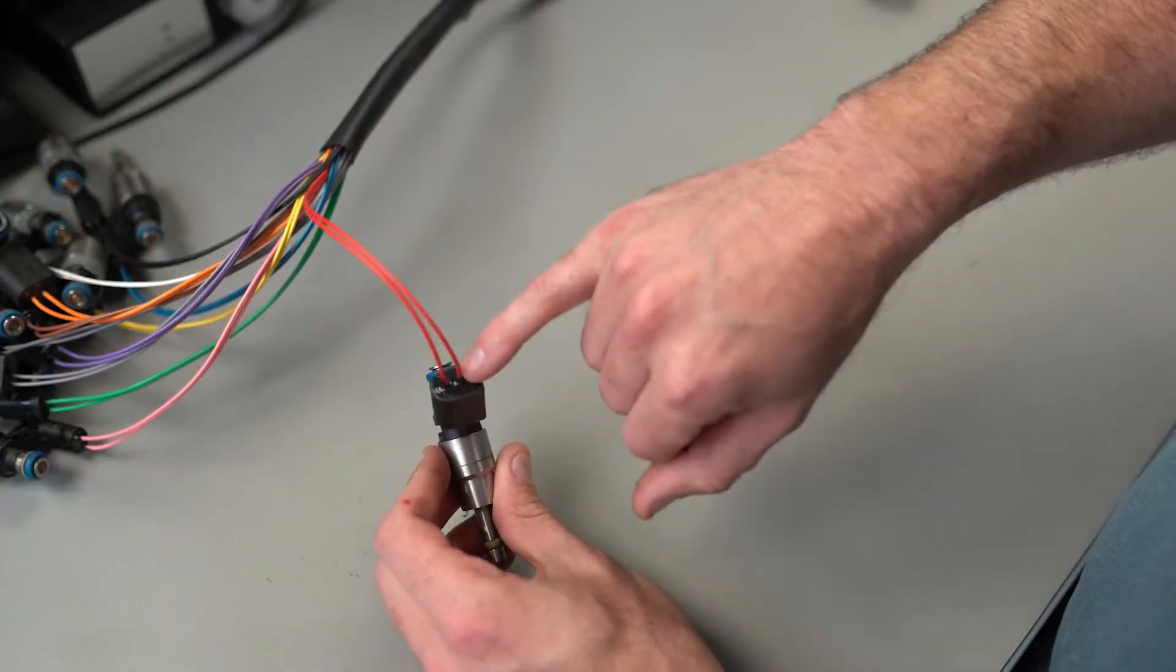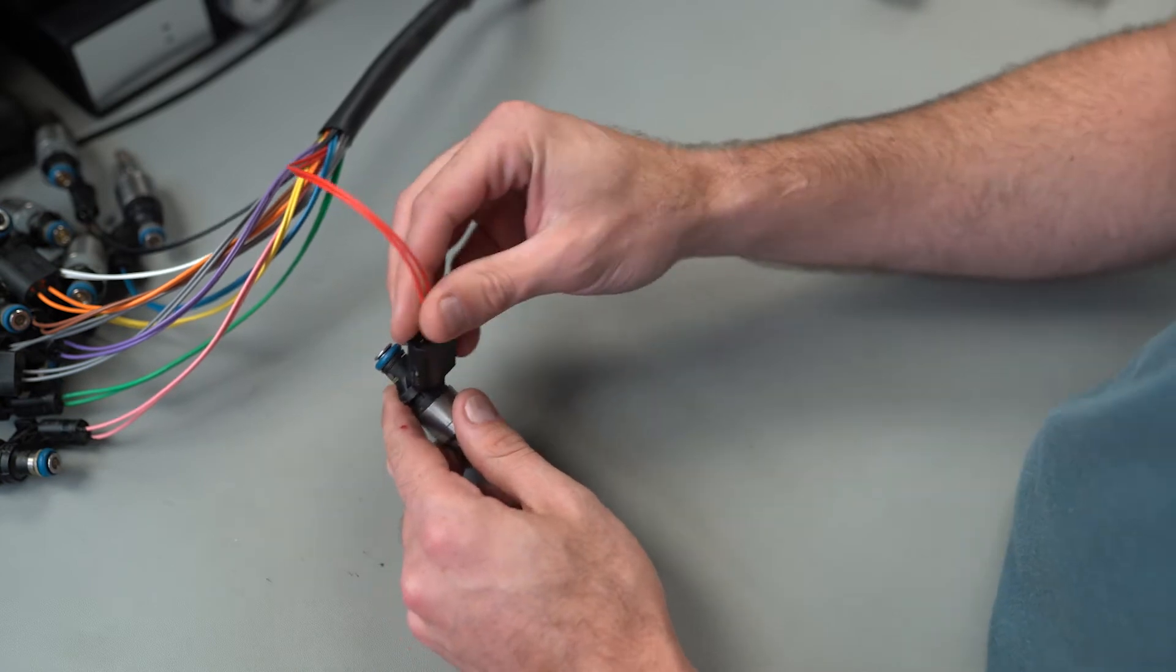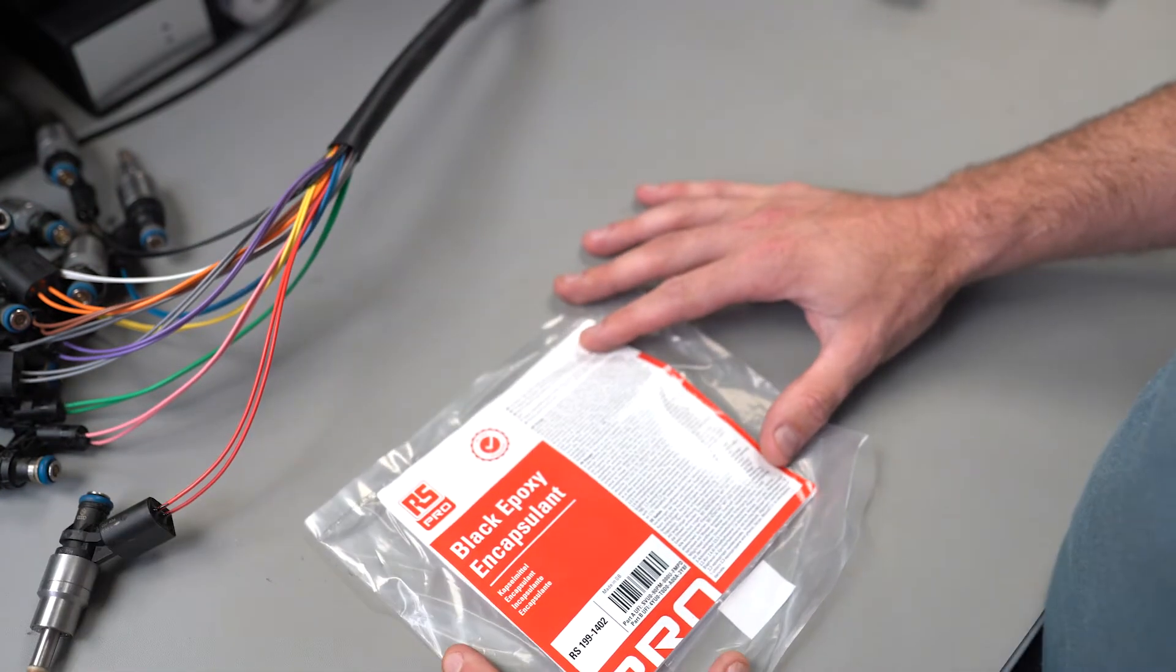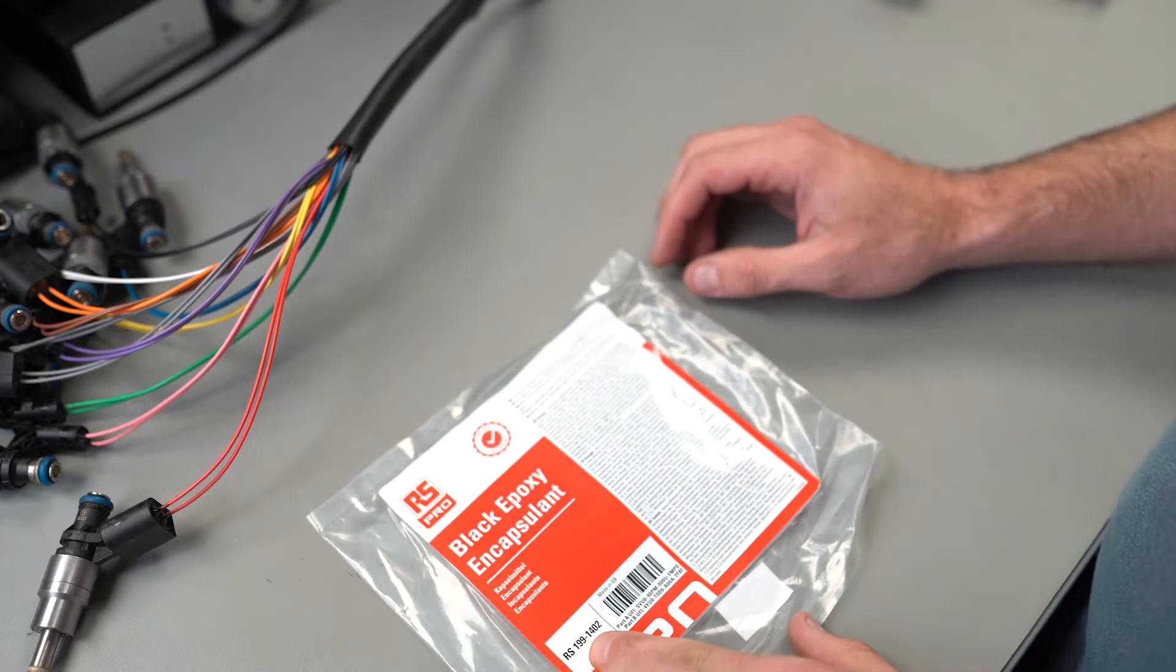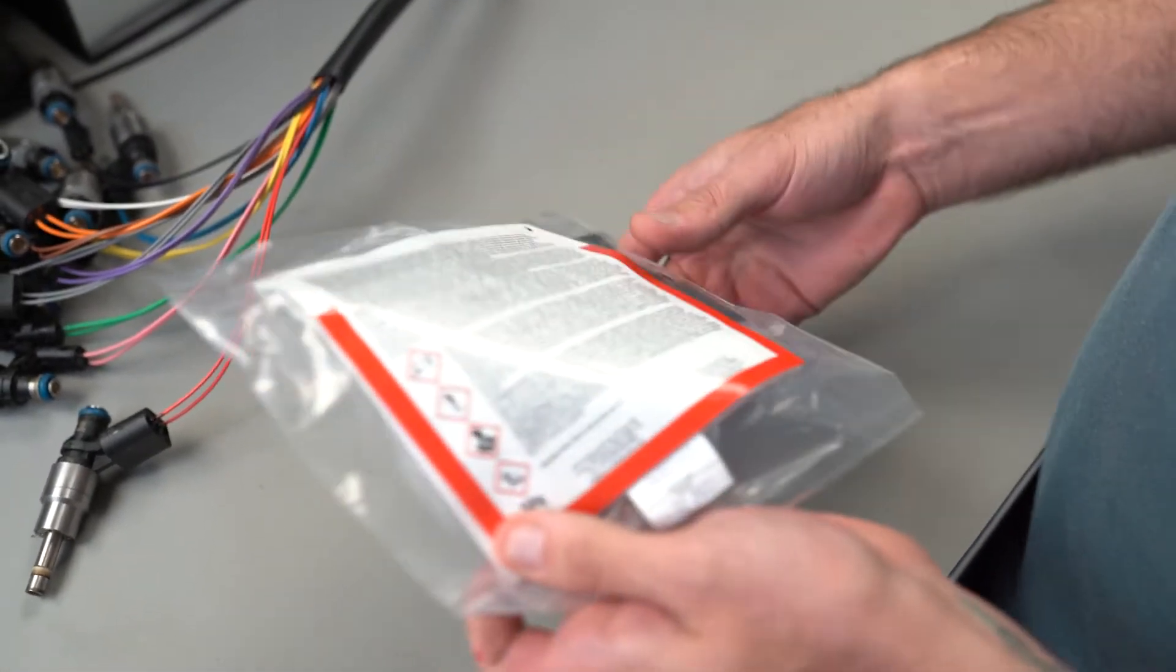As you can see, this has been potted with a two-pack resin that we get, and I will get the part number. So we'd like to use the RS Pro Black Epoxy Encapsulant, which is part number RS199-1402. This stuff is great.